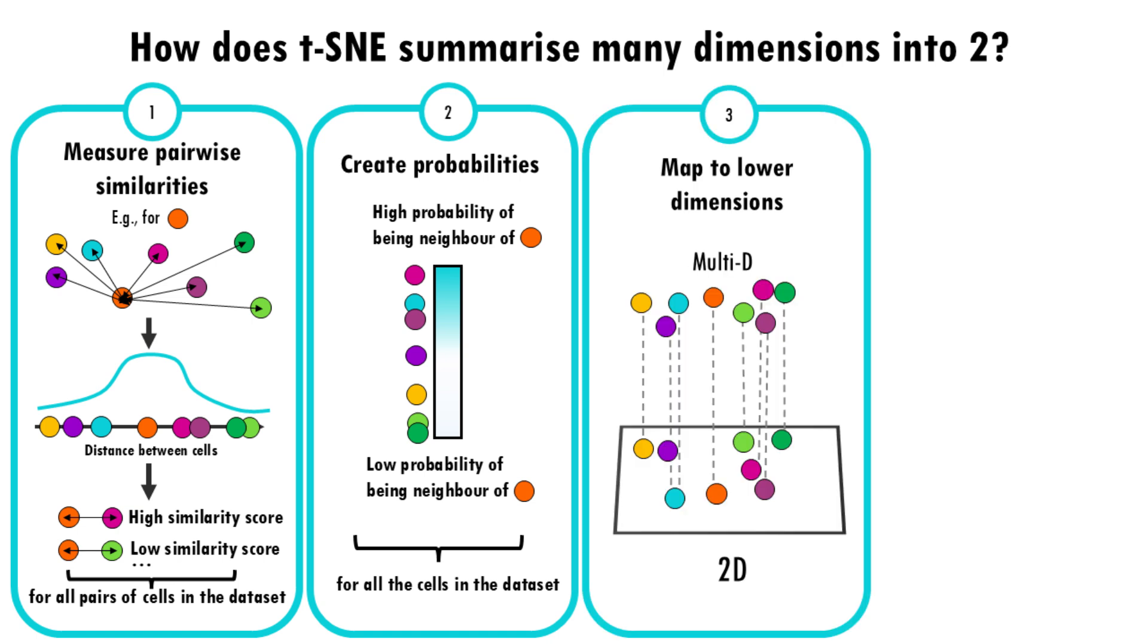Next, t-SNE maps these probabilities into lower dimensions. So it creates a new 2D space and tries to position the data points there. The goal is to place points so that similar cells in the original high dimensional space are still close together in this new 2D space and dissimilar cells are further apart.